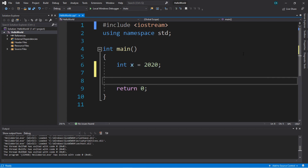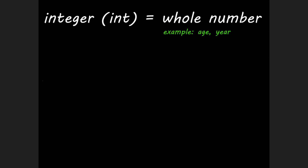Before we discuss data types, note that these are only a few of the data types available — I'm covering the basic ones just to get you started. The integer data type will only store a whole number. An example would be an age or a year — you couldn't store a decimal value. If you want to declare a variable of the integer data type, you just write int before the variable name.